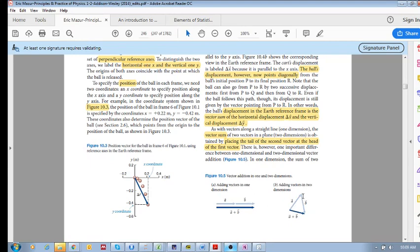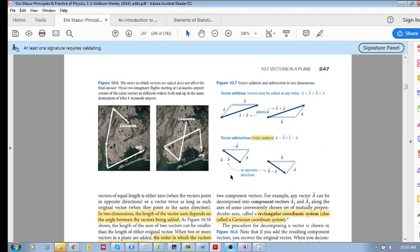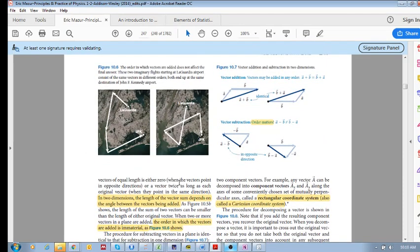You take the tail of the one vector and you place it at the head of the other. Now, when you are adding, I hope you take note of this, when you're adding vectors, when you're doing a vector sum, the order does not matter. So, for example, look at this picture over here where the person is flying from LaGuardia Airport to JFK Airport. I think this is in New York City. So you've got this motion over there, this vector over here, so it's a displacement, and then the person flies there, the person flies there, the person flies there finally to JFK. These are all vectors. These are maybe displacement vectors, something like that.